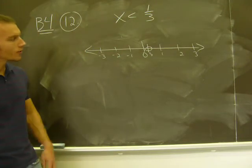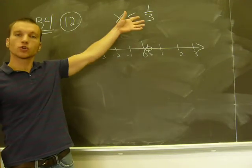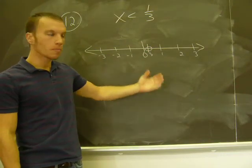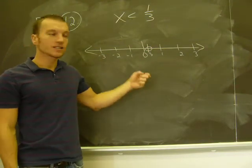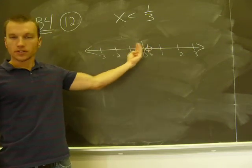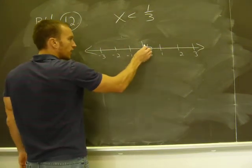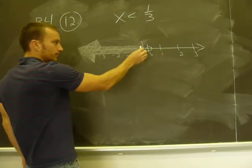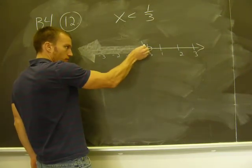So I draw an open circle, and I'm not going to fill it in because it's not included in this solution set. x is less than 1 third. So I leave the circle open, and then I graph everything that's less than 1 third. That's all these numbers going this way. I'm going to shade everything back here, starting at 1 third.